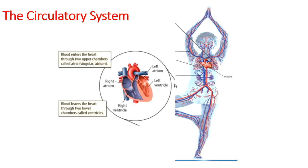Blood vessels transport blood to all organs in the body. Because your body uses oxygen and nutrients continuously, your circulatory system transports blood between the heart, lungs, and other organs more than 1,000 times each day. Your heart is made up of muscle cells that constantly contract and relax.